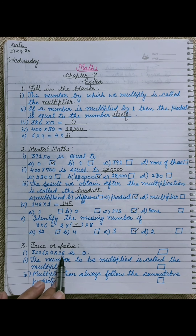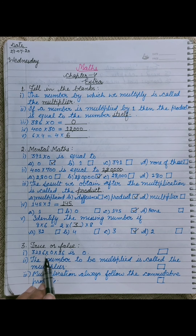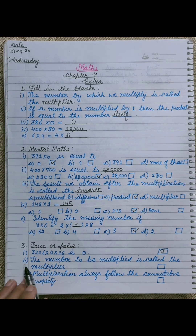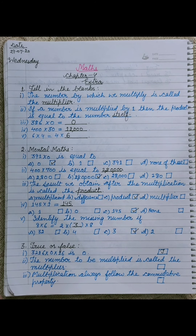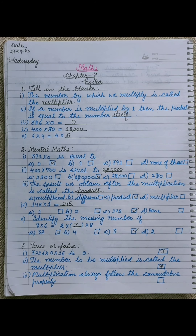Now move to true or false. First: 3216 into 0 into 16 is 0 — first two numbers ko multiply karenge to 0 aayega, phir usko next se multiply karenge, phir 0 aayega, so answer is 0. It is true. Second: the number to be multiplied is called the multiplier — jise multiply karte hain usse multiplicand bolte hain, aur jis number se multiply karte hain usse multiplier. So this statement is wrong because it is called multiplicand.